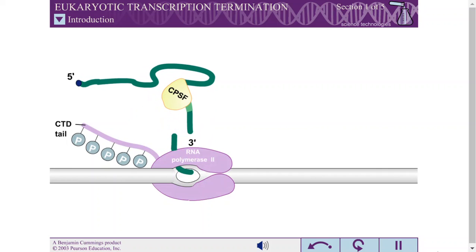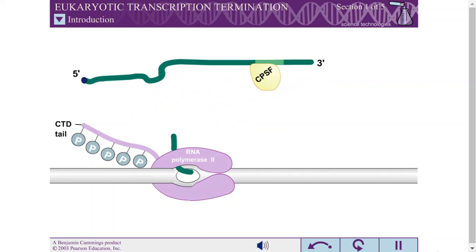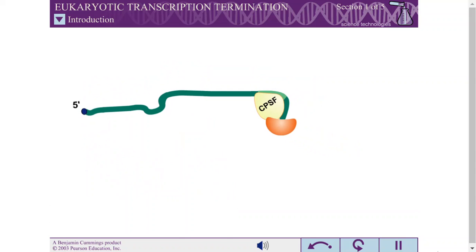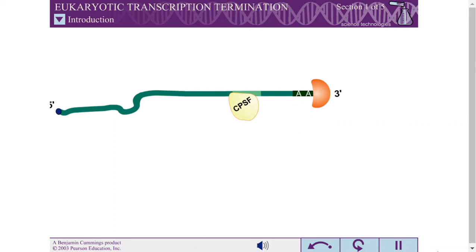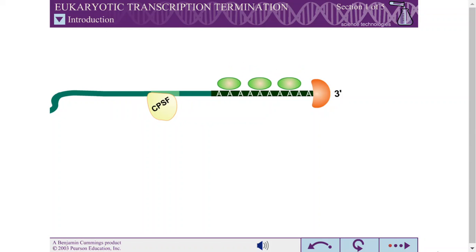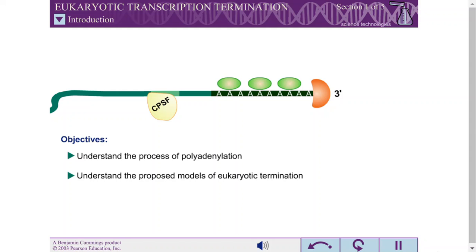Eukaryotic mRNA has to be processed in various ways before being exported from the nucleus for translation. One such process takes place during the termination phase of the transcription cycle, where a long chain of adenines is added to the 3' end of the mRNA transcript. This process is called polyadenylation. When you have completed this exercise, you should understand the process of polyadenylation and understand the proposed models of termination in eukaryotes.